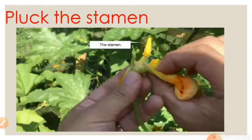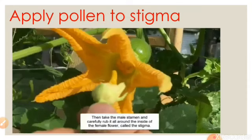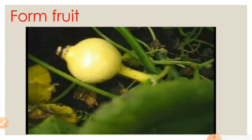Now open 5 out of the 10 bags containing female flowers and brush or apply the collected pollen grains onto the stigma with a soft paintbrush or by hand. Take care not to damage the stigma. After a few days, we can see that flowers in all bags that were not opened would wilt or fall without forming a fruit, while most of the flowers to which pollen was applied will form fruits.